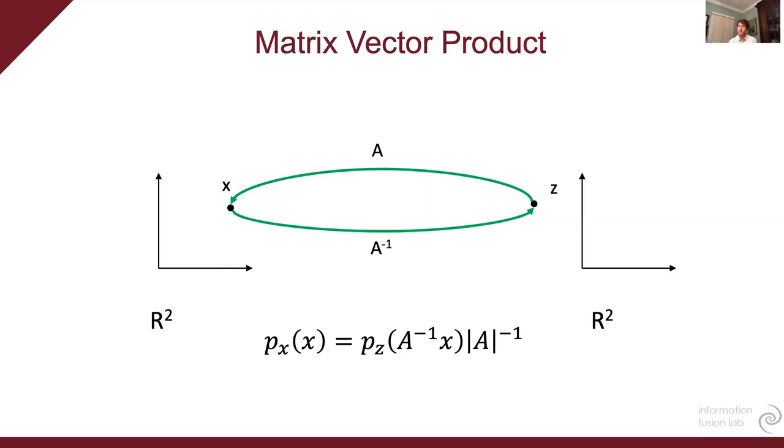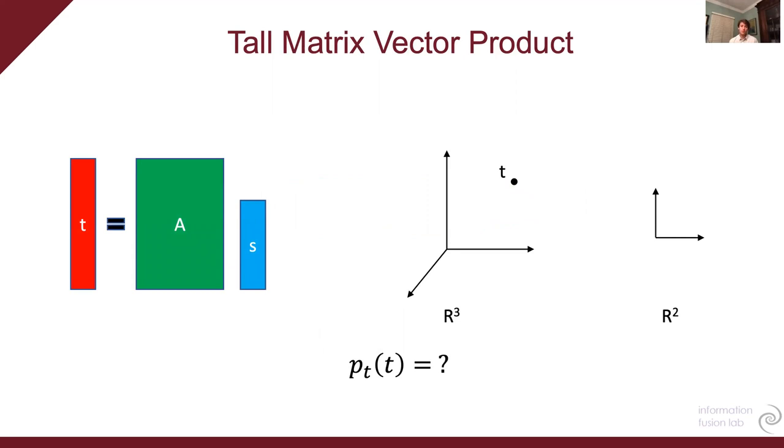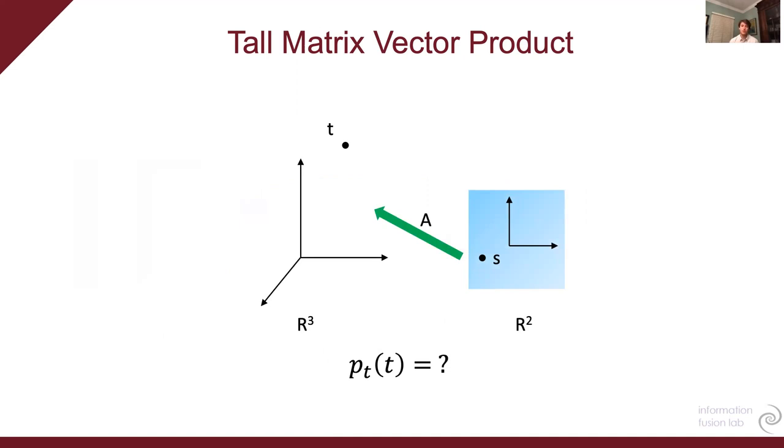However, if A is not square, we can't compute the density of T using just a tall matrix vector product. And to see this, we first have to consider the image of A. So the image of A is all the points that we can map to from S using the matrix vector product. And unfortunately, this image is only a hyperplane in the 3D space. So any points that lie off of this hyperplane can't be represented by the model, so we won't be able to assign a density to it.